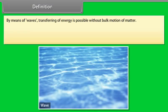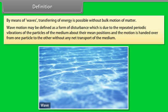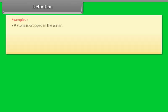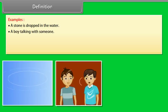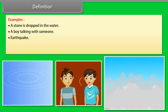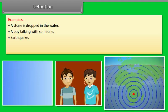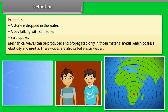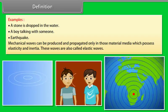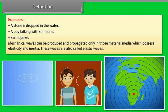Definition: By means of waves, transferring of energy is possible without bulk motion of matter. Wave motion may be defined as a form of disturbance which is due to the repeated periodic vibrations of the particles of the medium about their mean positions, and the motion is handed over from one particle to the other without any net transport of the medium. A stone dropped in water, a boy talking with someone, and earthquakes are some examples of wave motion. In this chapter, we shall study mechanical wave motion. Mechanical waves can be produced and propagated only in material media which possess elasticity and inertia. These waves are also called elastic waves.